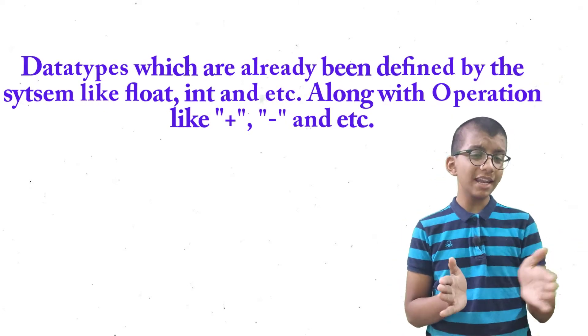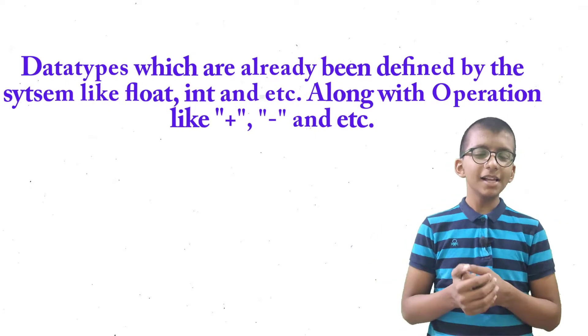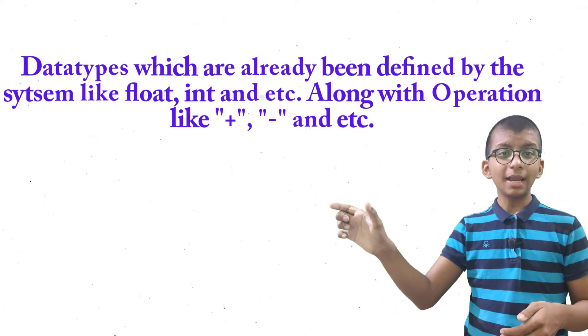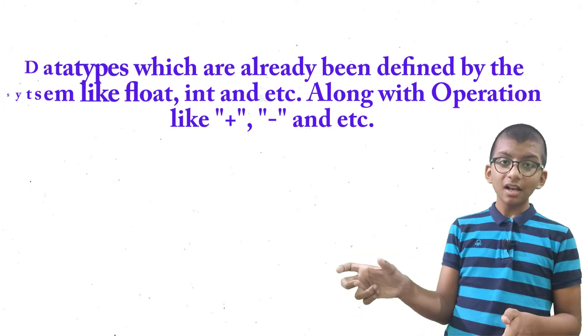These are already defined in any programming language like Java, Python, C, even C++. These are the system-defined data types. Along with those data types, we can do whatever operations we want — we can add, subtract, multiply, divide, or do any kind of operation. Because system-defined data types define both the data type and its operations, we can define them as data types defined by the system along with operations.